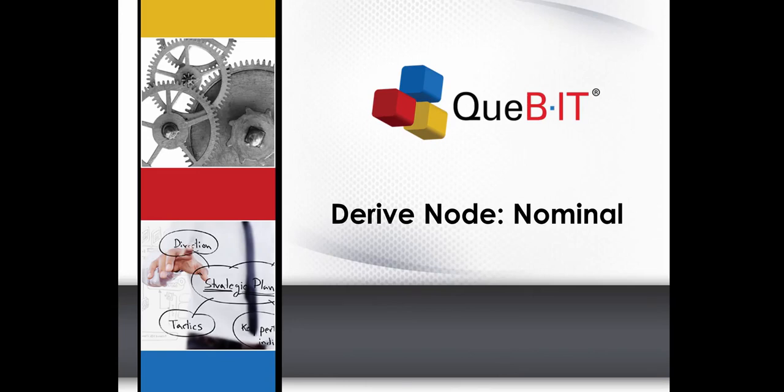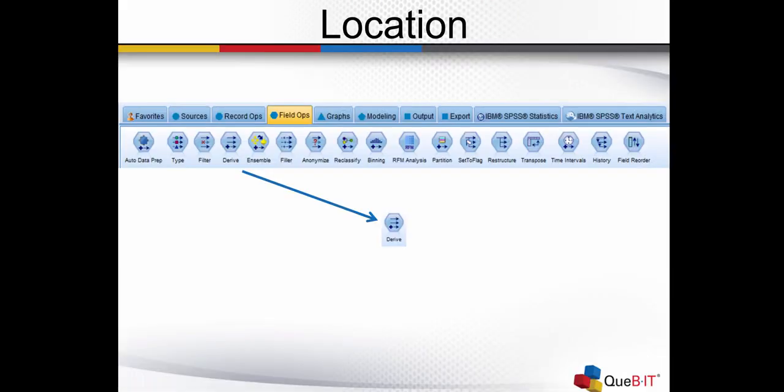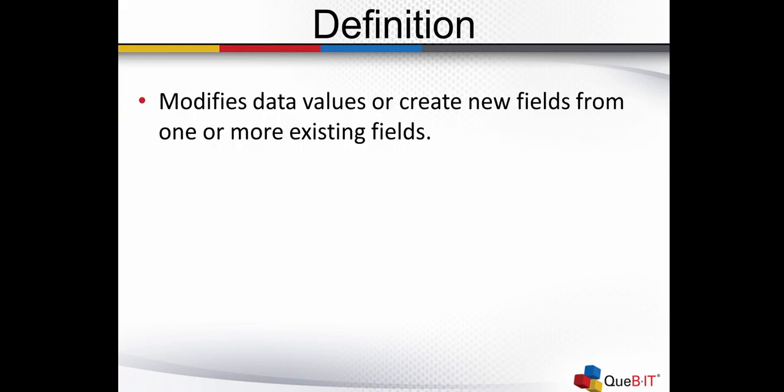Let's talk about the Derive node. The Derive node offers six methods to create a new field. In this video, we're going to talk about how to derive a new field as a nominal. The Derive node is located in the FieldOps palette. This node modifies data values or creates new fields from one or more existing fields.